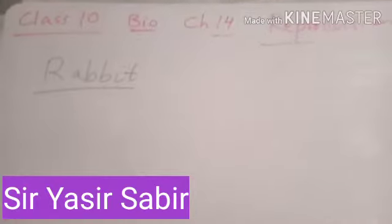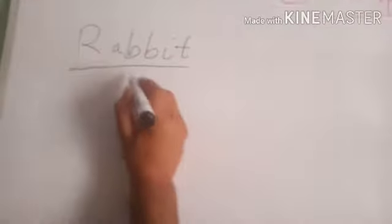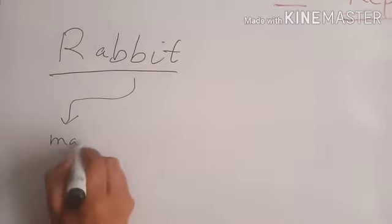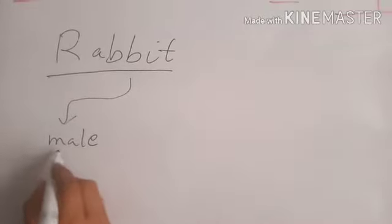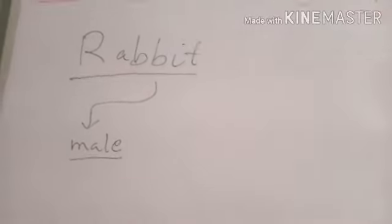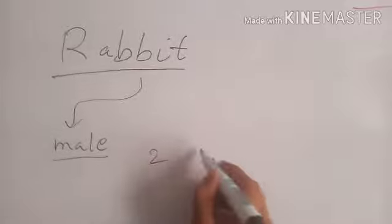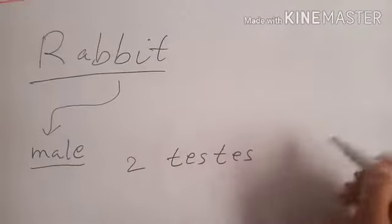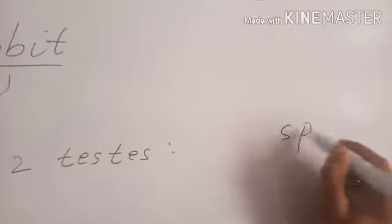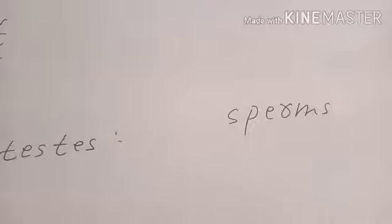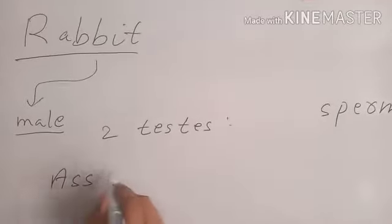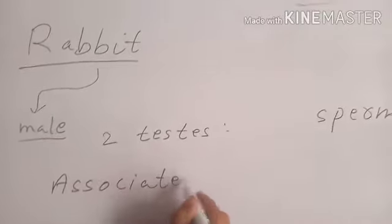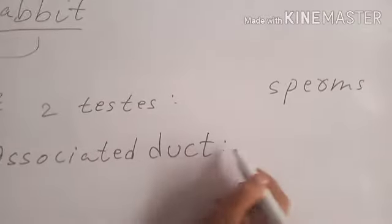Today's topic is the reproductive system of the rabbit. The reproductive system of the male rabbit is different from the female rabbit. First, we will discuss the reproductive system of the male rabbit. It consists of two testes, which produce sperms, and the ducts associated with the testes, whose function is to transport and store the sperms.